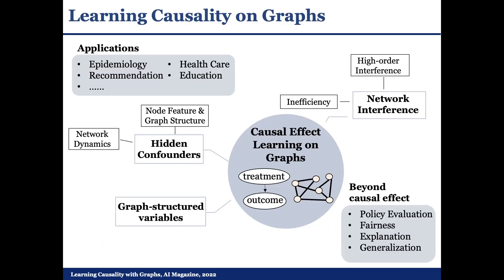In this paper, we summarized the main categories of works on causal effect estimation on graphs, including works which address the unique challenges of this task, like network interference, hidden confounders, and graph-structured variables. We also introduced the ways we have leveraged the uniqueness of graph information to facilitate causal inference. Beyond causal effect, we also introduced other causality-involved algorithms on graphs regarding policy evaluation, fairness, explanation, and generalization. If you are interested in these topics, this paper has more details of each direction and corresponding algorithms.